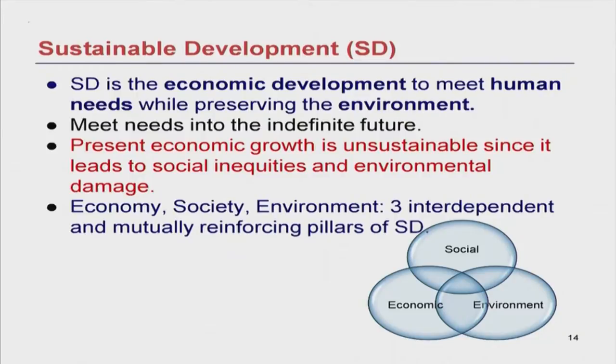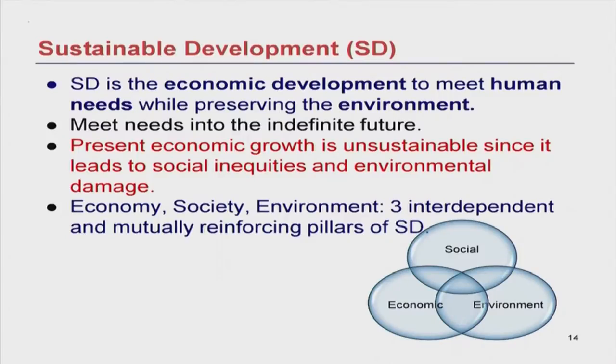They are interdependent because you cannot achieve one without the other two. How can you achieve economic prosperity if there is social injustice to an extreme extent — it will simply not last. For any economic process, the environment is the ultimate resource; if the environment is degraded, you cannot get economic development. They are mutually reinforcing because if you do it right, you will be able to get all of them. If your economic development is on solid ground, it will naturally lead to social justice as well as environmental protection.